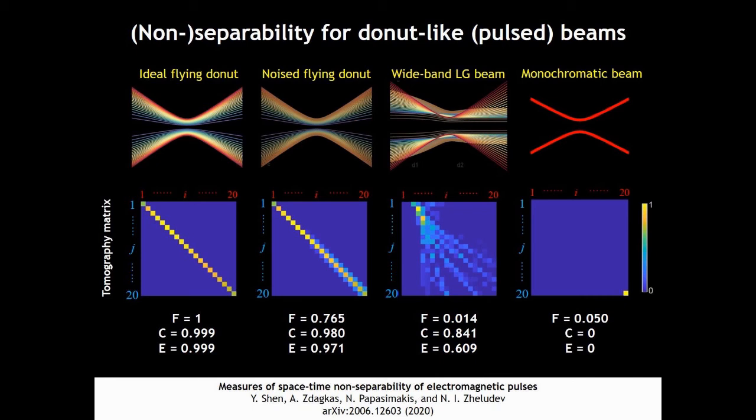And after adding some noise onto the flying donut, the fidelity is decreasing to 0.6. That means there is still some isodiffraction effect, but with some deviations.